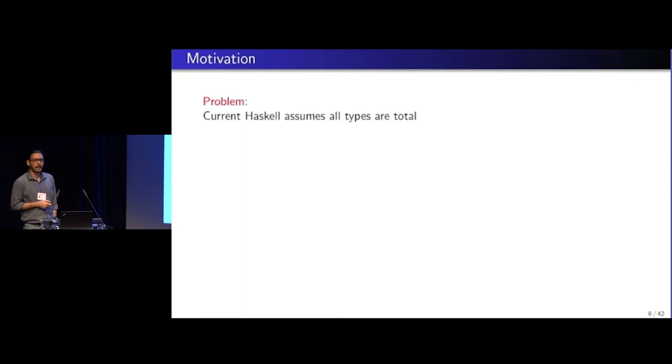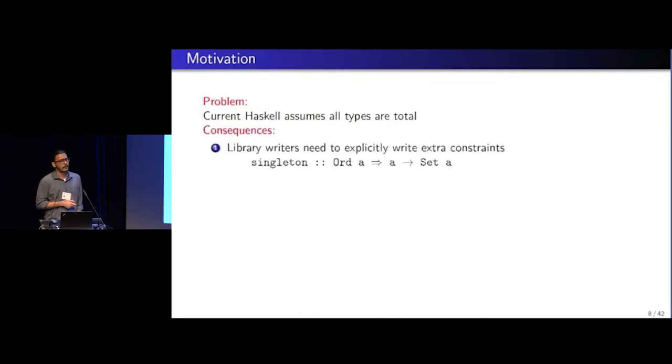So the current problem is that Haskell treats all types to be total. And this has somewhat two annoying consequences. First is that if a library writer wants to define a partial data type, what they would do is declare it as total.